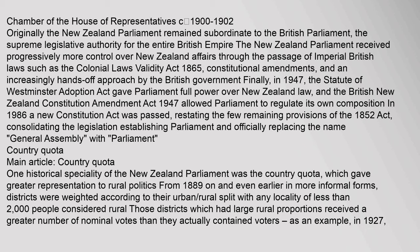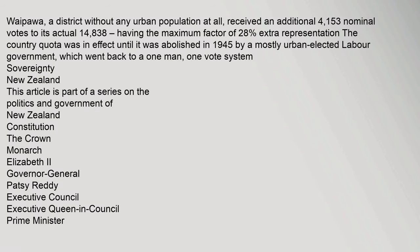Country Quota: One historical speciality of the New Zealand Parliament was the country quota, which gave greater representation to rural politics from 1889 on. Districts were weighted according to their urban-rural split, with any locality of less than 2,000 people considered rural. Those districts which had large rural proportions received a greater number of nominal votes than they actually contained voters. For example, in 1927, Waipawa, a district without any urban population at all, received an additional 4,153 nominal votes to its actual 14,838, having the maximum factor of 28% extra representation. The country quota was in effect until it was abolished in 1945 by a mostly urban elected Labour government, which went back to a one-man, one-vote system.